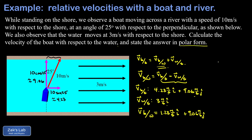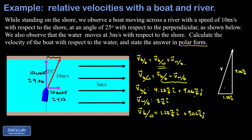I'm going to visualize these components in a right triangle where the x-component is 1.23 m/s to the right, the y-component is 9.06 m/s pointing up, and the net velocity points up and to the right. I'll call the magnitude little v and the angle theta — polar form means I need that magnitude v and angle theta giving the direction.